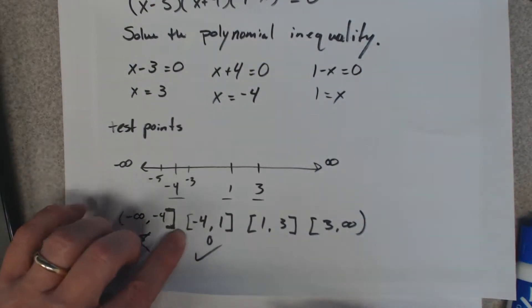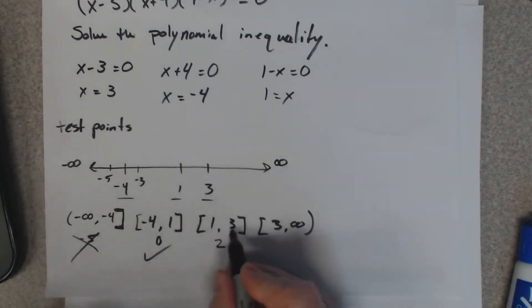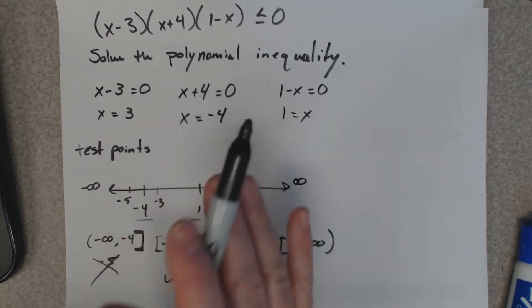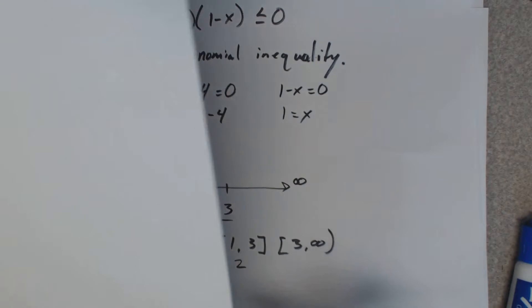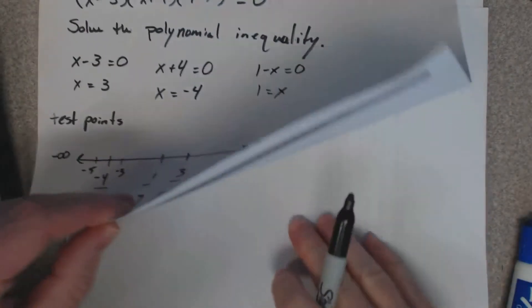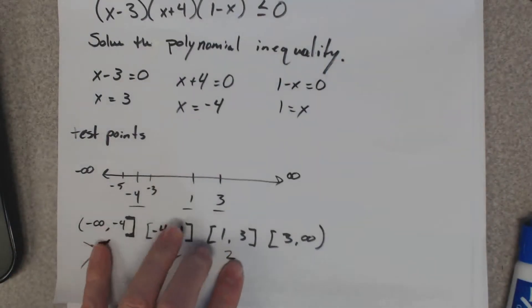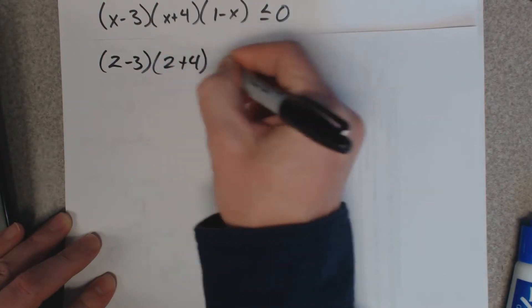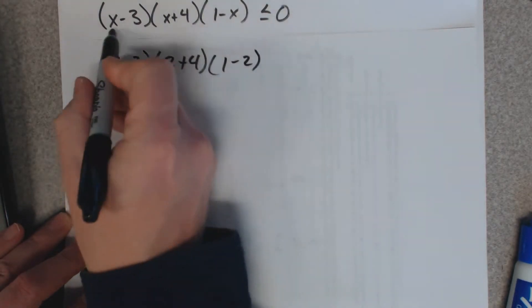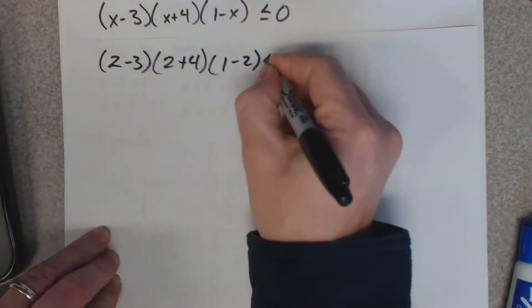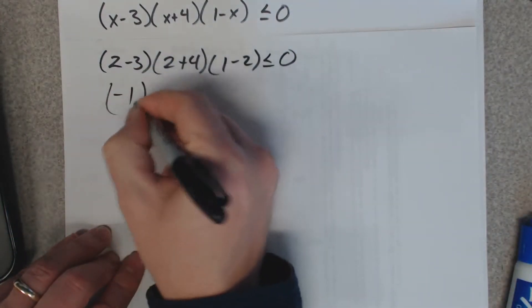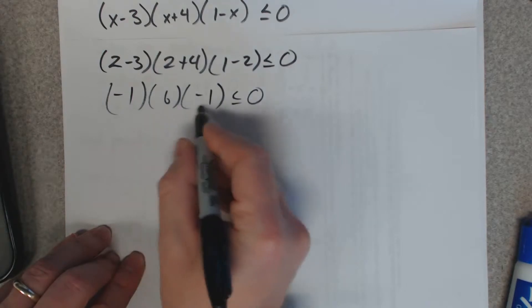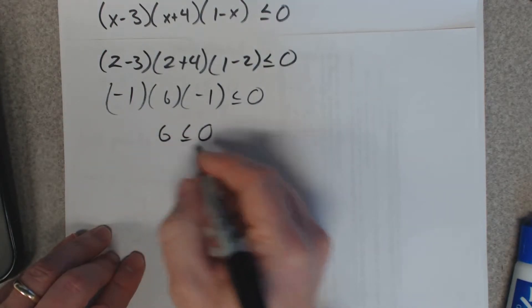Let's check the interval [1, 3]. A good test point is 2 — I won't use 1 or 3 since I already know those give zero. Plugging in 2: (2−3)(2+4)(1−2) equals negative 1 times 6 times negative 1. That's negative 6 times negative 1, which is positive 6. Positive 6 is not less than or equal to zero, so this interval does not work.